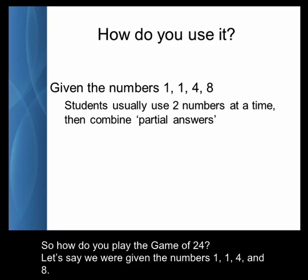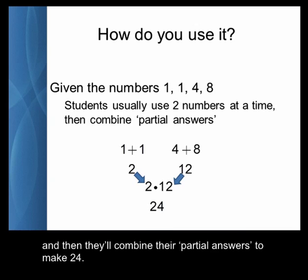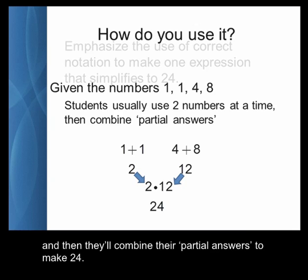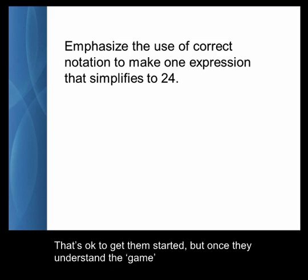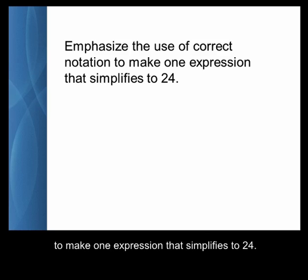So how do you play the Game of 24? Let's say we were given the numbers 1, 1, 4, and 8. Most students will start by using two numbers at a time. They'll say 1 plus 1 is 2, 4 plus 8 is 12, and then combine their partial answers to make 24. That's okay to get them started, but once they understand the game, emphasize the use of correct mathematical notation and the order of operations to make one expression that simplifies to 24.